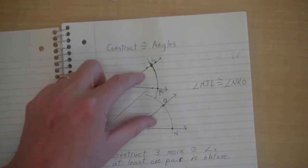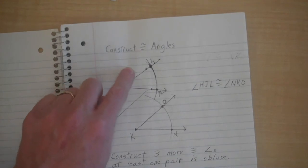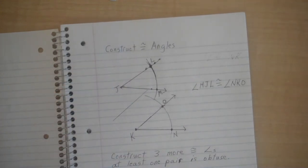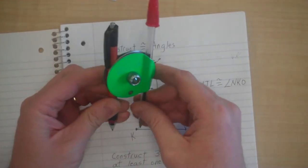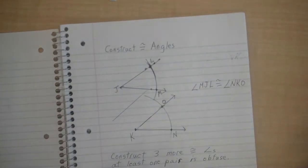Make sure at least one pair is obtuse. These two angles are acute, I'd like for you to do one that's obtuse.